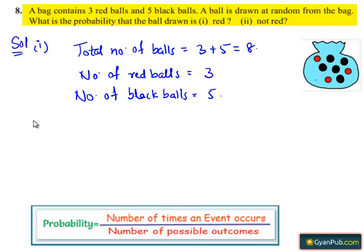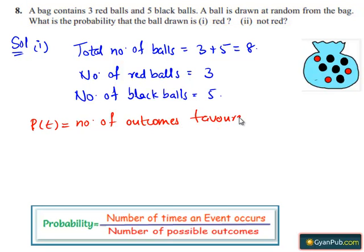We know that the probability of any event P of E equals to number of outcomes favorable to event E whole divided by total number of possible outcomes.